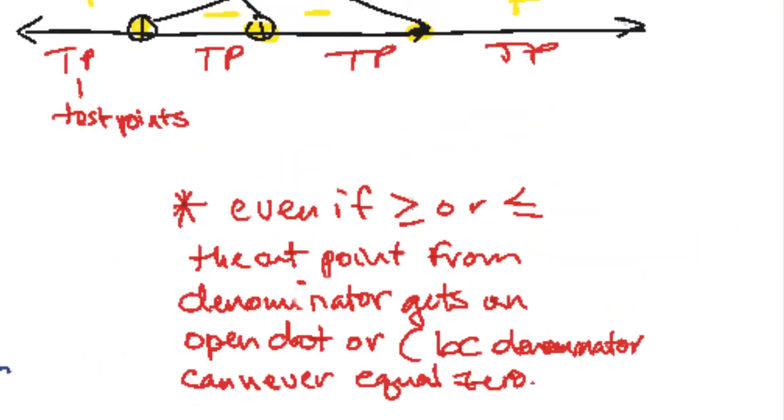Now, even if you have an equal sign, greater than or equal to or less than or equal to, the cut point from the denominator gets an open dot no matter what, because you can never equal 0 in the denominator. So it should always be a parenthesis when we're dealing with a cut point from the denominator.